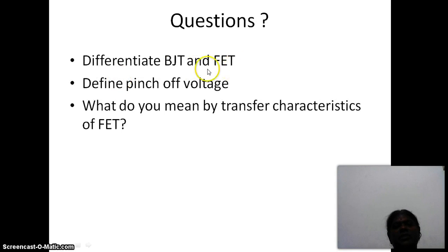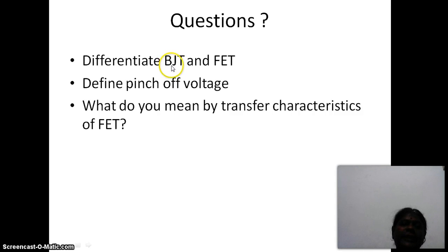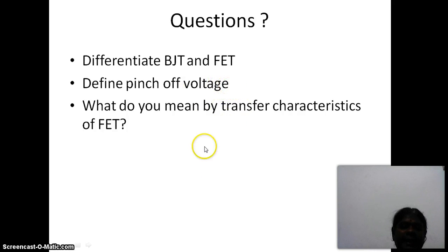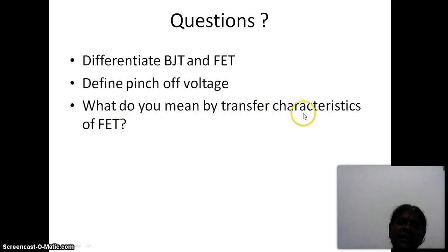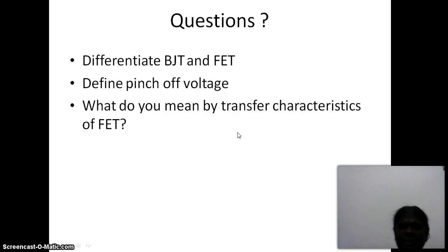Review questions: Differentiate BJT and FET. BJT is a current control device; FET is a voltage control device. BJT terminals are emitter, base, collector; FET terminals are source, drain, and gate. BJT is a bipolar device where current flows through both types of carriers; FET is a unipolar device where current flows through only one type of carrier. Define pinch-off voltage: for every gate source voltage, as VDS increases, the drain current ID increases linearly, and after a particular VDS it remains saturated — the knee of the curve is called the pinch-off voltage. Transfer characteristics means VDS versus ID for constant VGS; drain characteristics means VGS versus ID. Thank you, we will meet in the next class.